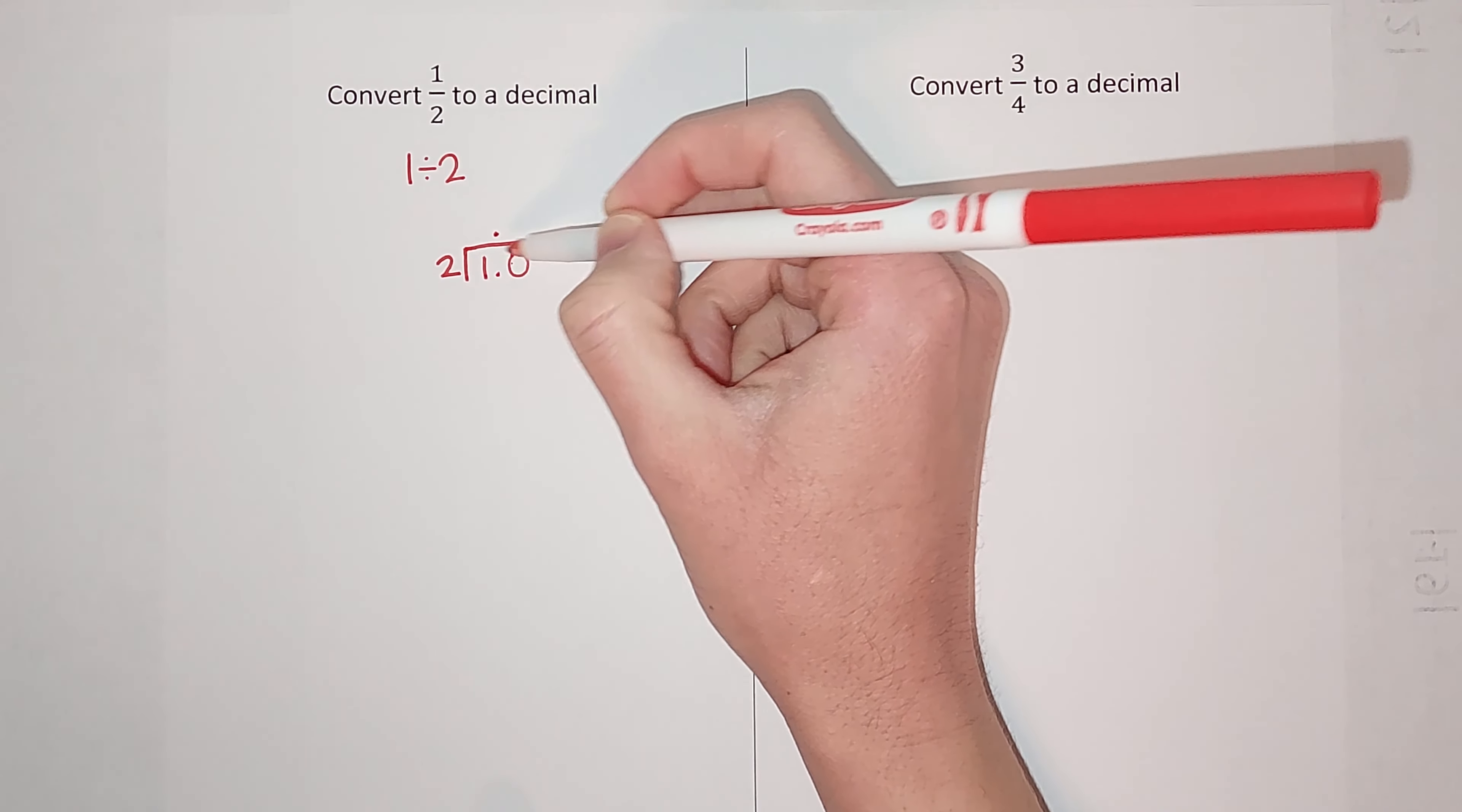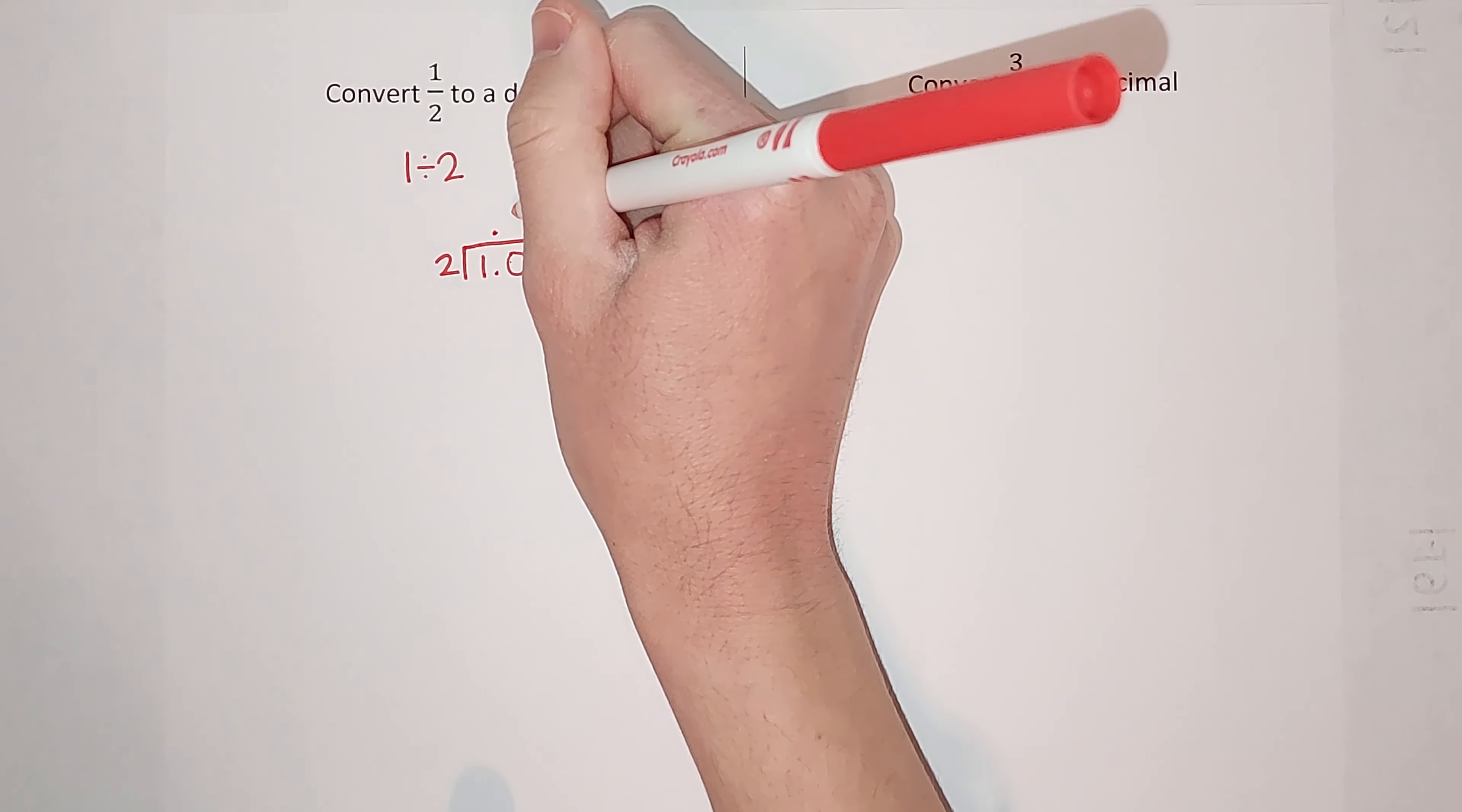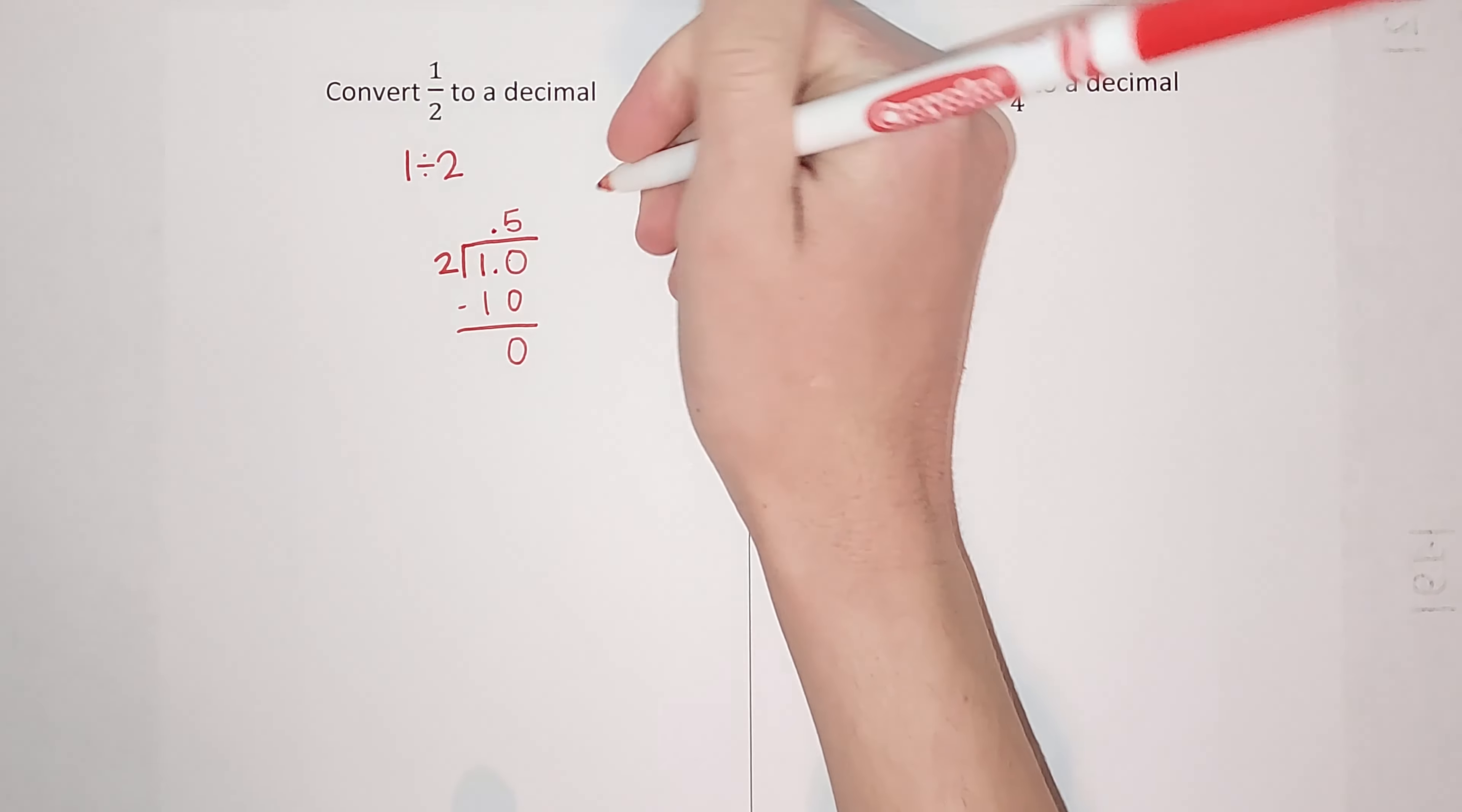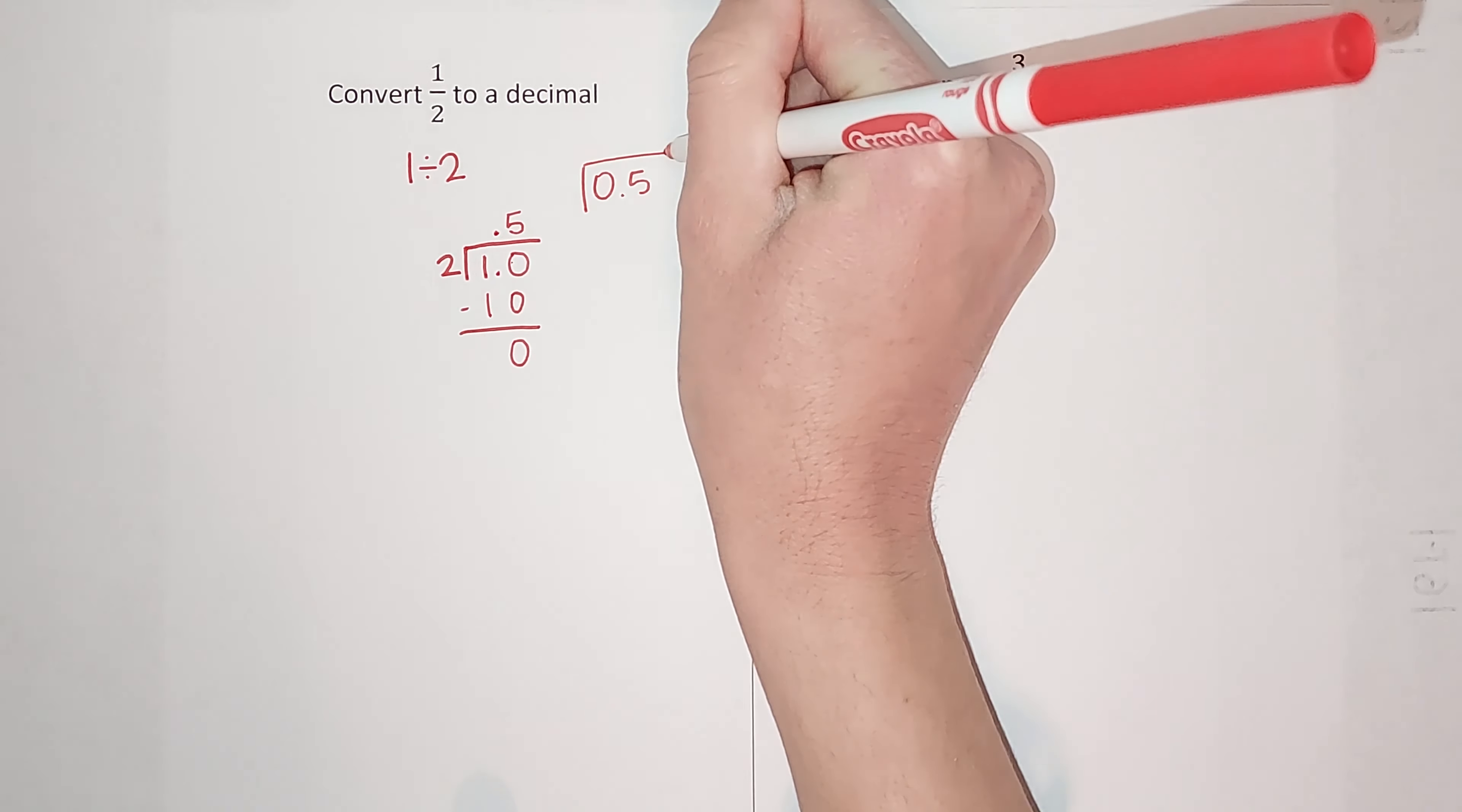Okay, so 2 goes into 10 five times. 5 times 2 gives me 10. I subtract and get 0, and look I'm done. 0.5. That's how we get that. There you go.